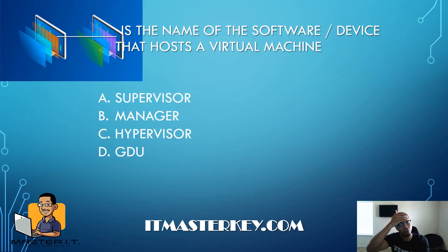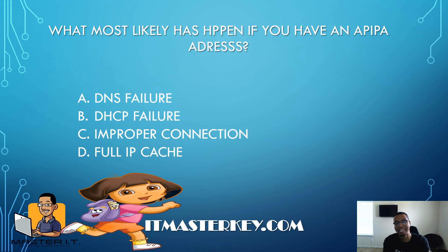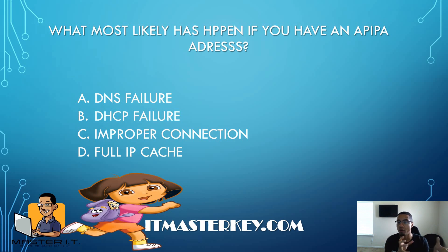Blank is the name of the software or device that hosts a virtual machine. Easy — hypervisor. What most likely has happened if you have an APIPA address? If you can't get an address from the DHCP server because you can't communicate with it, it assigns you a private address starting with 169. Quick troubleshooting tip: if you've got a 169 IP address, it's because you are not connected to the DHCP server — so the answer is DHCP failure.